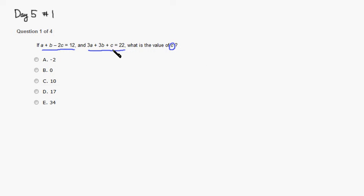Since we're looking for c, we're trying to get rid of a and b. So let's try to do that. So you have a second equation. I'm going to write the second equation first. So you have 3a plus 3b plus c is equal to 22.